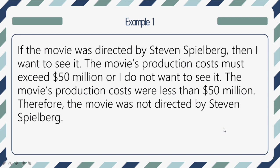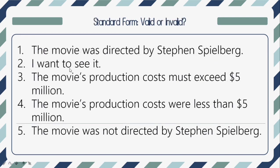By converting this to standard form, here is what we will have. Number one: the movie was directed by Steven Spielberg. Number two: I want to see it. Number three: the movie's production cost must exceed 50 million dollars. Number four: the movie's production costs were less than 50 million dollars. Therefore, the conclusion is: the movie was not directed by Steven Spielberg.